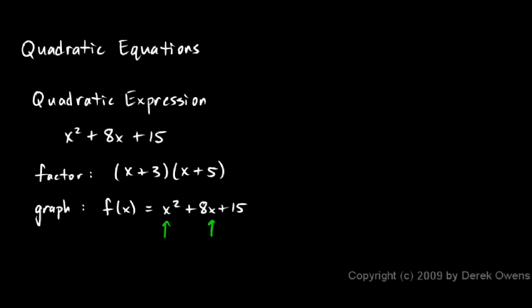We can put in a bunch of different numbers for x and get out a bunch of different values for the function f. We can graph this on an xy plane. Saying f(x) is equal to this is the same thing as saying y equals this.